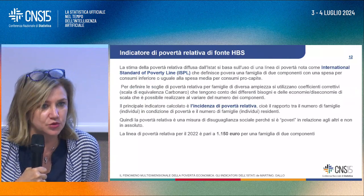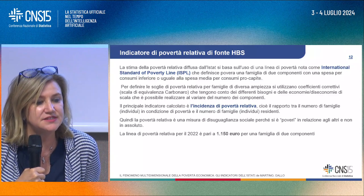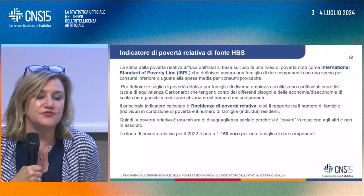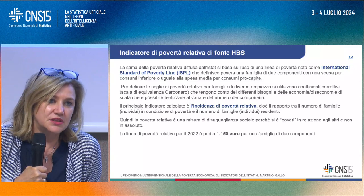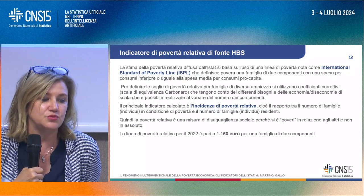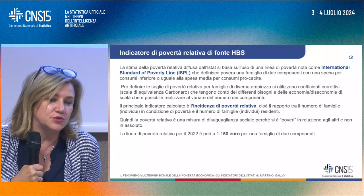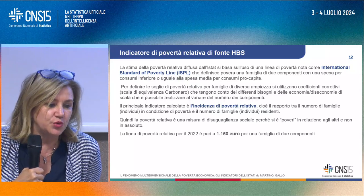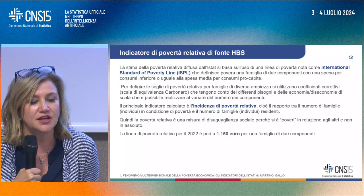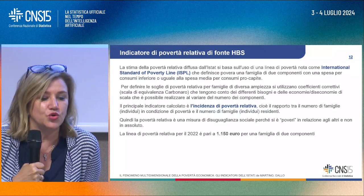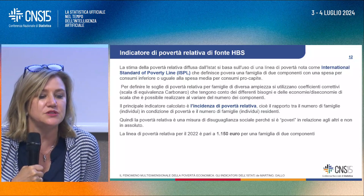L'indicatore di povertà relativa di fonte spese per consumi ha una linea unica nazionale, l'International Standard of Poverty Line, che definisce come povera una famiglia di due componenti con una spesa per consumi inferiore o uguale alla spesa media pro capite. Per le famiglie di diversa ampiezza si utilizza la scala di equivalenza Carbonaro, che tiene conto dei differenti bisogni ed economie o diseconomie di scala al variare del numero dei componenti. La linea di povertà relativa per il 2022 è pari a 1.150 euro per una famiglia di due componenti. La misura di povertà relativa è di disuguaglianza sociale: si è poveri in relazione agli altri e non in assoluto.